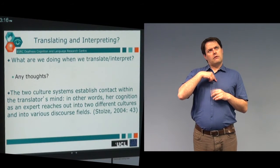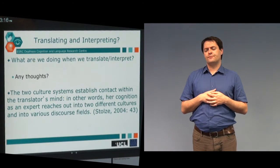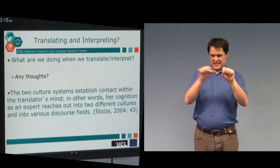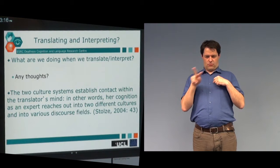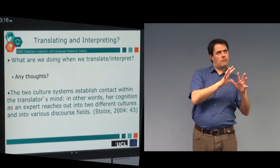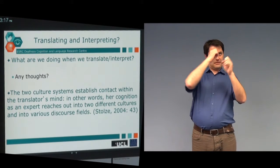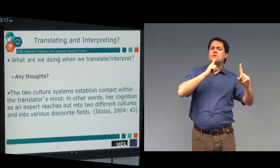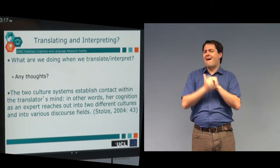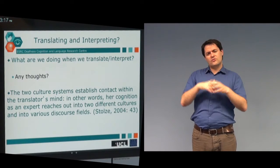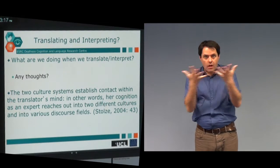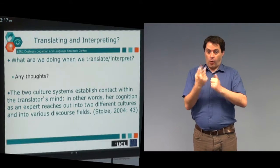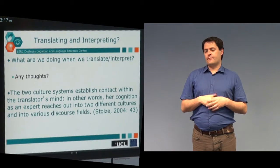When we're thinking about translation and interpreting, what do we think we're doing? I like this quote from Stokes: there are two cultural systems that the translator is trying to connect within his or her mind. The translator is trying to ensure that the target audience has a similar understanding as the original audience, drawing from two different cultures and many different discourse fields to create that connection. Although we need to be bilingual, being an interpreter is not about language itself — it's about people, it's about interaction, and it's about how we use language.